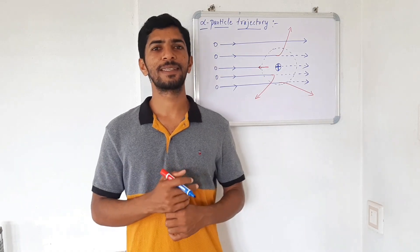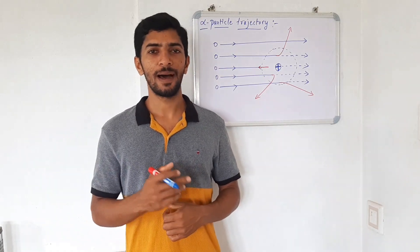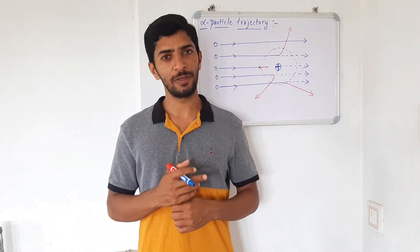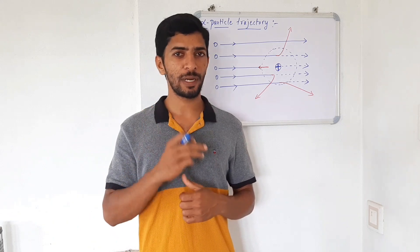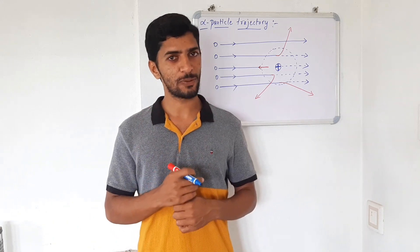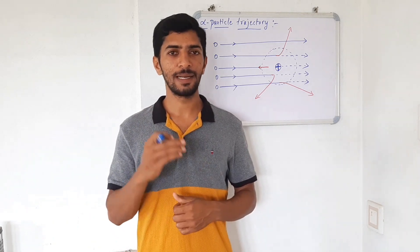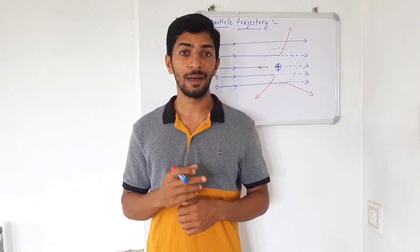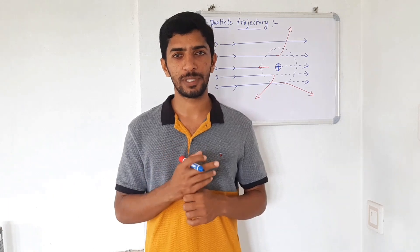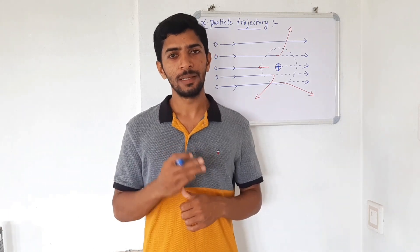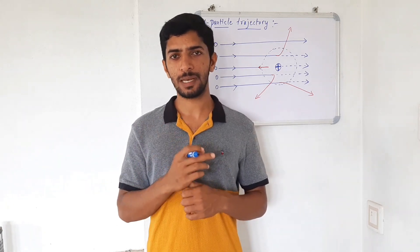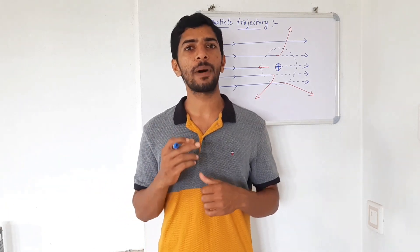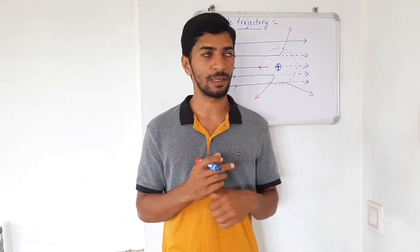Hello everyone, this is Rohit Kumar. I am here to explain two important terms of class 12 physics: impact parameter and distance of closest approach. These two terms come under alpha particle trajectory.